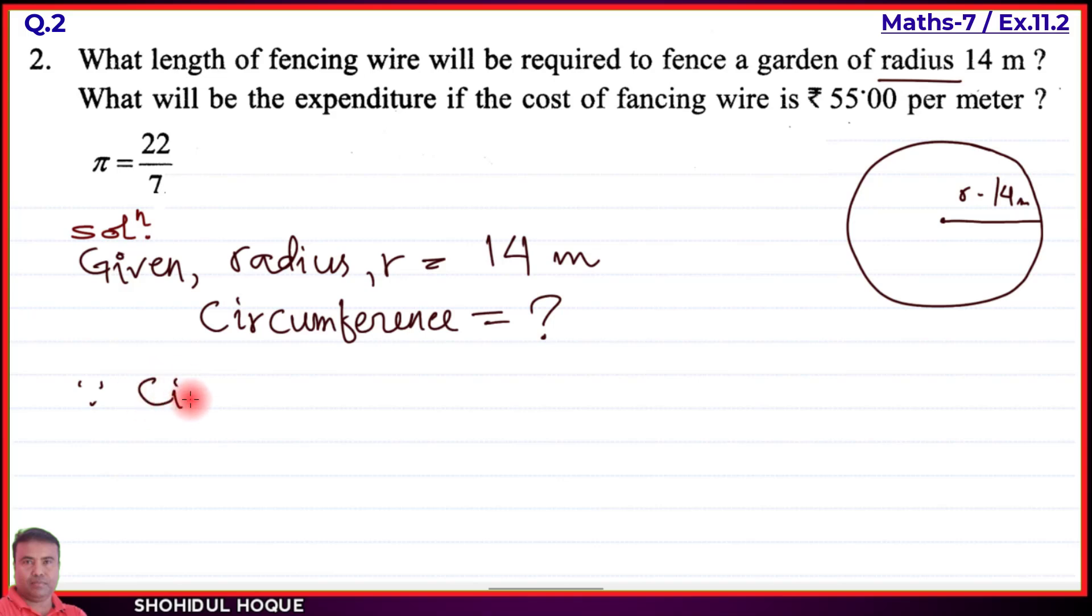The circumference of a circle formula is 2 pi r. This is the circumference formula we'll use.